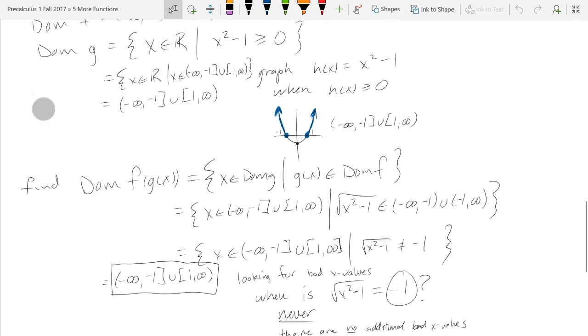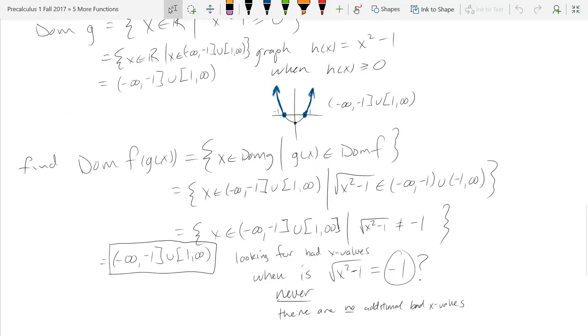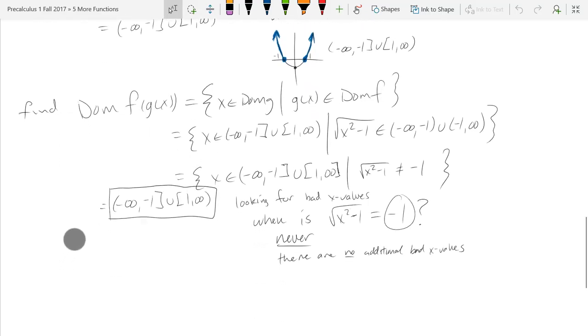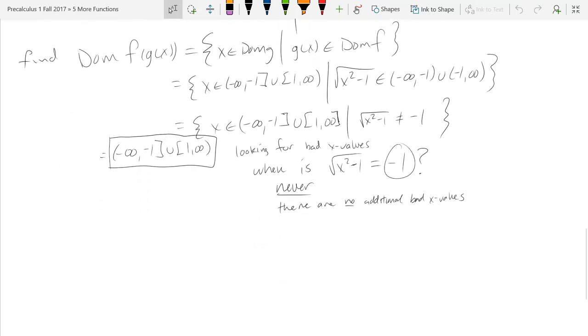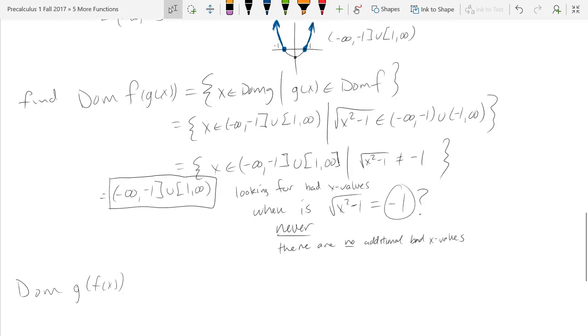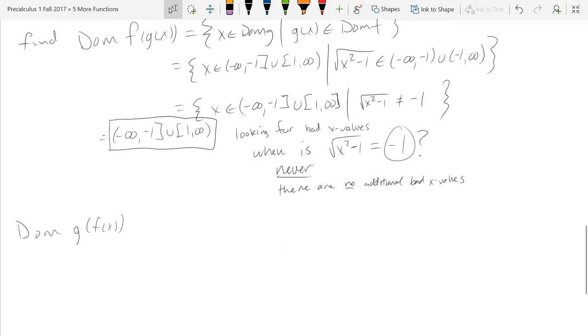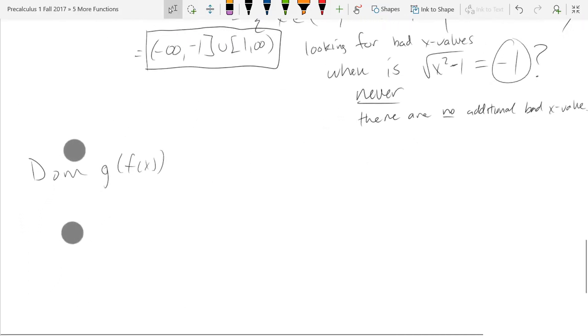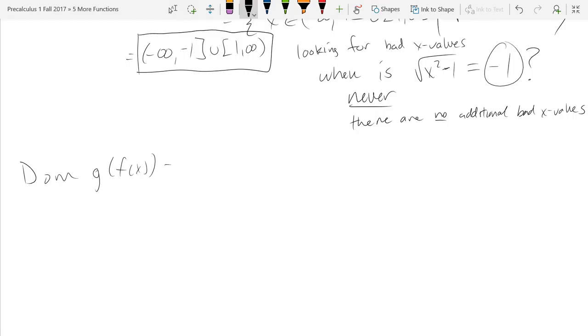So let's do, we did f of g of x. Let's compose them in the opposite order. So we're going to look for domain of g of f of x. We already did that. I think we did that for a different function. Okay. We did the same process, flipping them around, but we did that for the last example. Alright, so we want to know what is domain g of f of x. So I'll write down the set notation. This is x in...